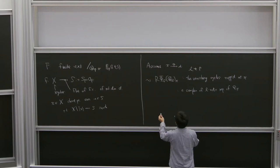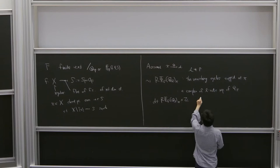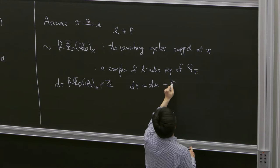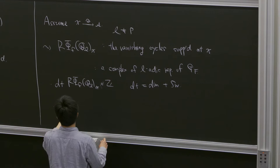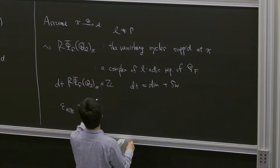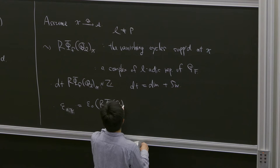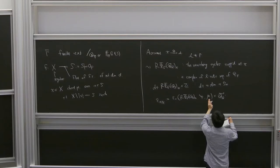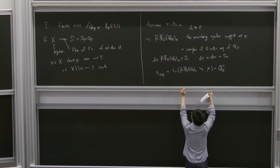To such a Galois representation, we consider two invariants. One is the total dimension. So this is an integer, and the total dimension is the sum of the usual dimension.